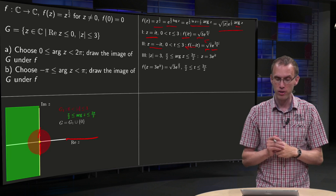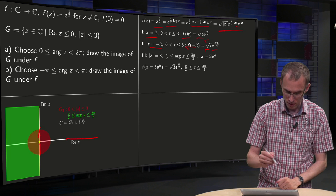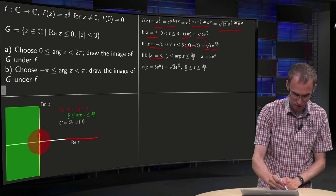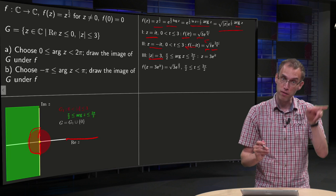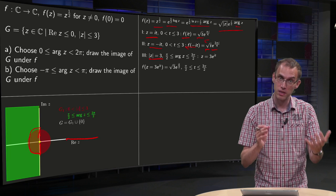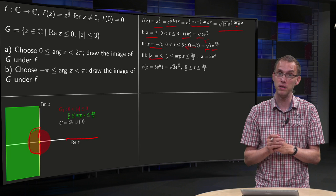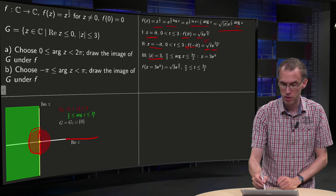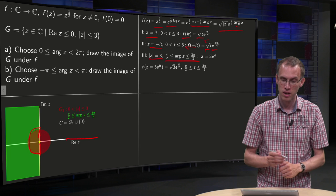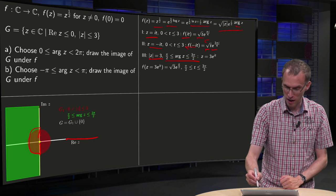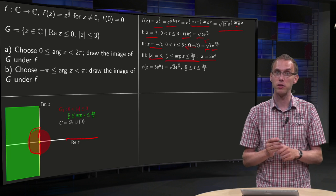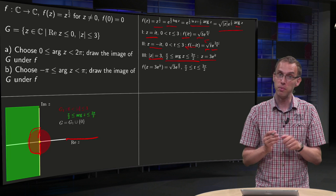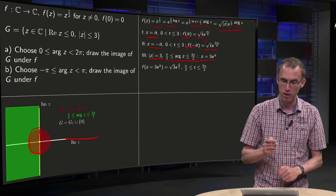On to the third segment. So there we have the norm of z equals 3, that's this part, and the argument between pi over 2 and 3 pi over 2, because remember the argument has to be between zero and 2 pi, so those are the arguments. So we have z equals 3 times e to the power of i t, with t between pi over 2 and 3 pi over 2.